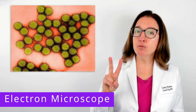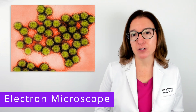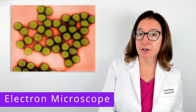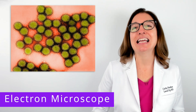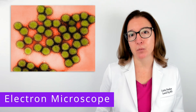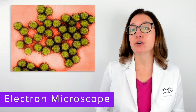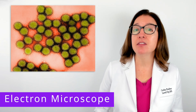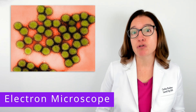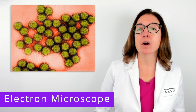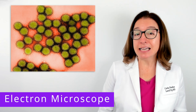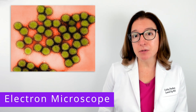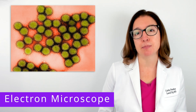There are two main types of electron microscopes: a transmission electron microscope and a scanning electron microscope. A transmission electron microscope creates 2D images of the internal structures of a specimen, whereas a scanning electron microscope creates 3D images of the surface of the specimen.